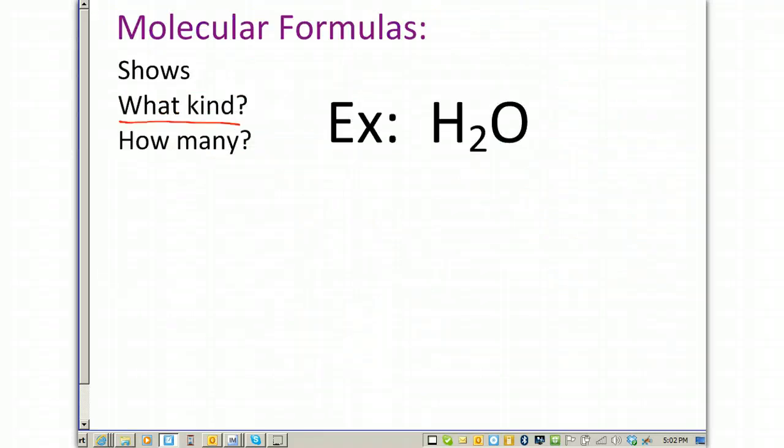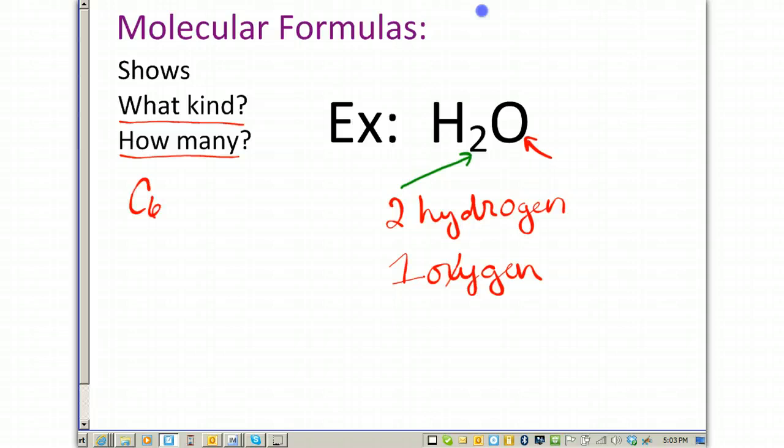Molecular formulas show what kind of element you have in the formula and how many of each there are. For example, in water, we have two hydrogens, and this is noted by the little two next to hydrogen, the subscript. It lets you know how many of that one you have. And we have one oxygen. Notice next to oxygen, there is no subscript, and that's because it's an understood one. Another example, we can look at glucose again, C6H12O6, and this would imply that we have six carbons, 12 hydrogens, and six oxygens.